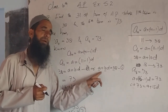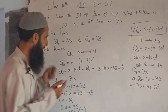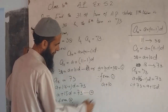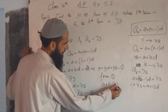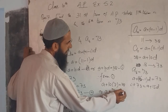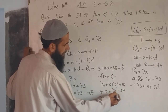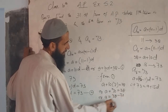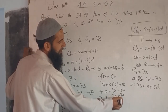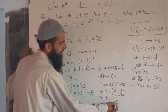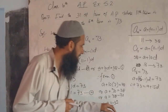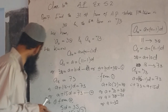We substitute the value of d into equation one to get the value of 'a'. From equation one: a plus 10 into 7 = 38, so a plus 70 = 38, therefore a = 38 minus 70, which gives a = negative 32. So the first term 'a' is minus 32 and the common difference 'd' is 7.